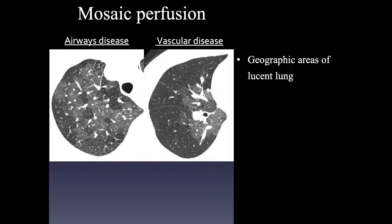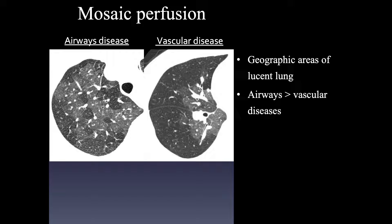There is some controversy in the use of the term mosaic perfusion. We use this term at UCSF and it represents geographic areas of lucent lung. This is most commonly seen with airways disease, less commonly with vascular diseases. What it does represent is decreased perfusion regardless of etiology.